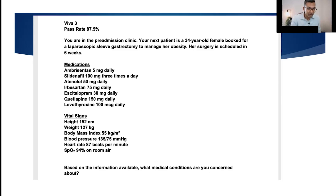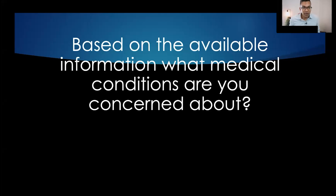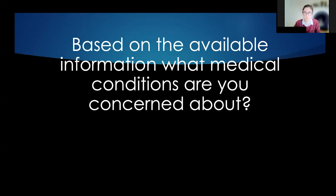Based on the sildenafil and ambrisentan, I'm most concerned that this patient has moderate or severe pulmonary hypertension, given that she is on an endothelin-1 antagonist. The atenolol and irbesartan also make me wonder whether she has an underlying cardiac condition, which may either be a cause or consequence of her pulmonary hypertension. The irbesartan and levothyroxine make me wonder whether she has an autoimmune condition, which may cause this. Given that she is quite young at 34, pulmonary arterial hypertension is certainly a differential.